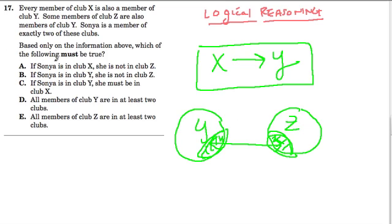In answer A, if Sonia is in Club X, she is not in Club Z. Well, Sonia is a member of exactly two clubs, so she can't be a member of three. So if she's in Club X, we know she has to be a member of Club Y, and that's her two clubs. So she cannot also be a part of Z. And that's the correct answer.